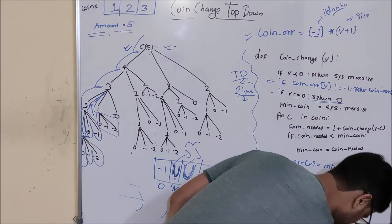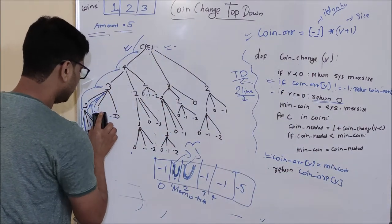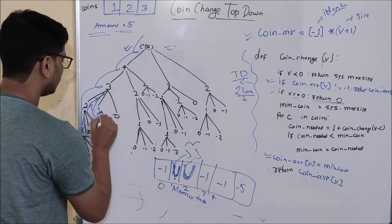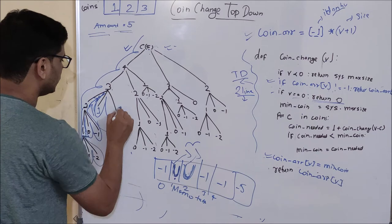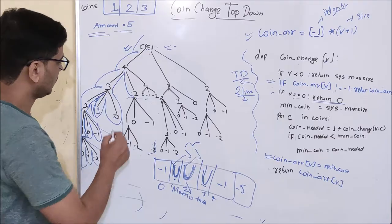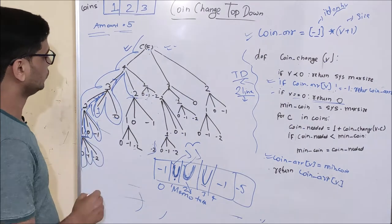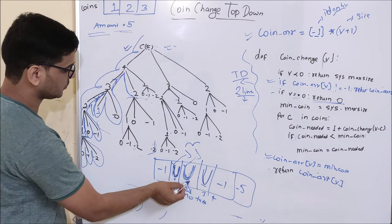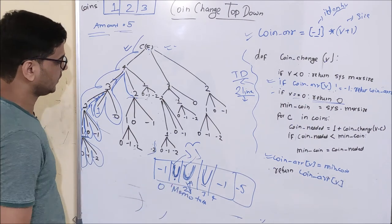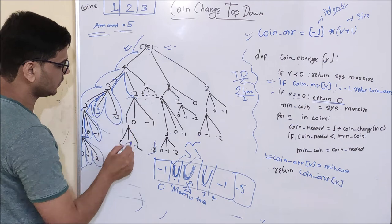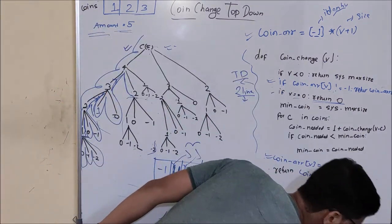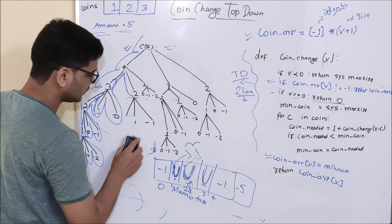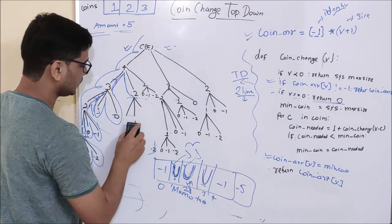What we will do next is delete it — that is, in my top-down approach, this particular branch will not grow. Then 3 will return its answer to 4. After that, 4 will call 2 again. First, it will check in the memo table whether I have updated it or not. As you can see here, 2 is updated. So basically, it will directly take its value from the memo table, and this function call will not be made.